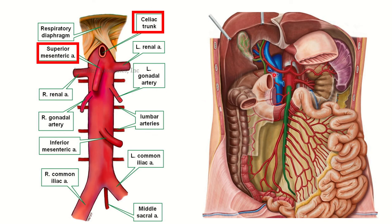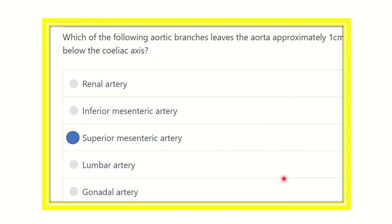In this second picture, here we can see the abdominal aorta. This point is the celiac trunk, and just below it we can see this artery — this is the superior mesenteric artery. So our final answer is the superior mesenteric artery, because the superior mesenteric artery lies below the celiac axis and it is a branch of the abdominal aorta. Thank you.